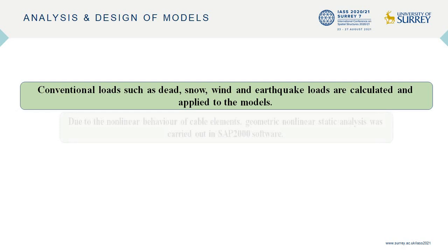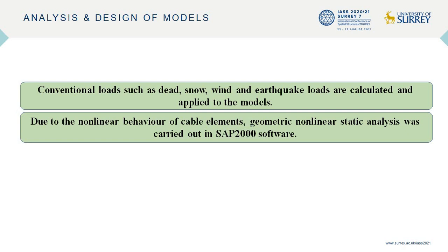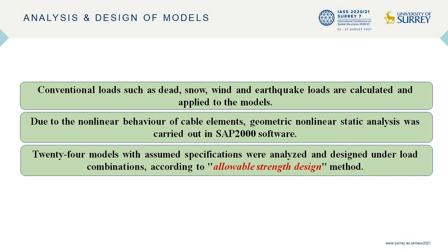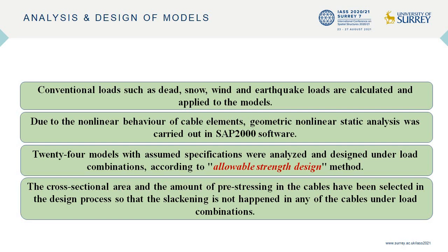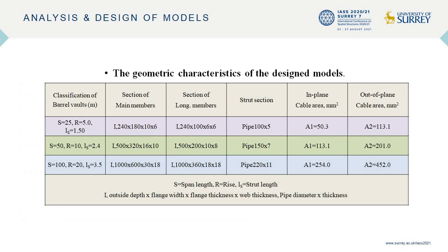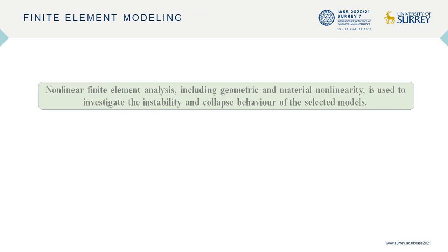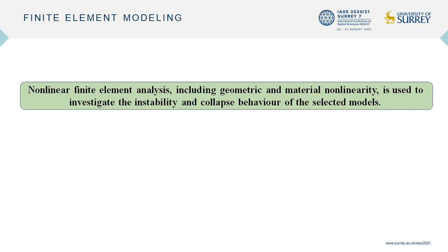Due to the nonlinear behavior of cable elements, geometric nonlinear static analysis was carried out in SAP software. Twenty-four models with AISC specifications were analyzed and designed under load combinations according to the allowable stress design method. The cross-sectional area and amount of prestressing in cables were selected so that slackening does not occur in any of the cables under load combinations. Geometric characteristics of the design models are shown in the table. Nonlinear finite element analysis including geometric and material nonlinearity is used to investigate the instability and collapse behavior of selected models. All analyses are carried out using ABAQUS software.